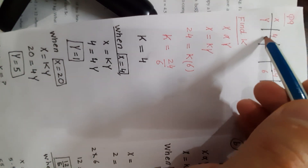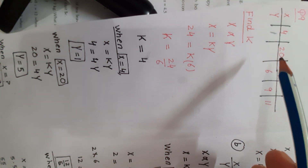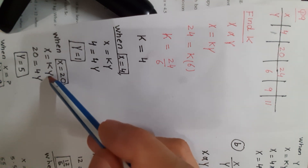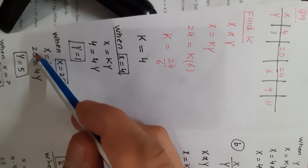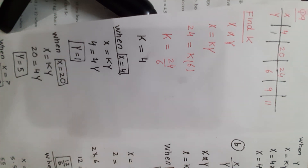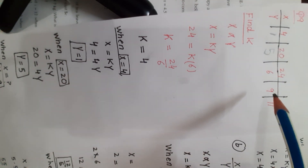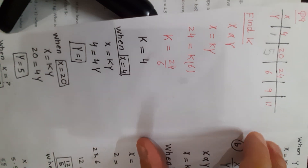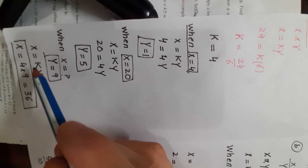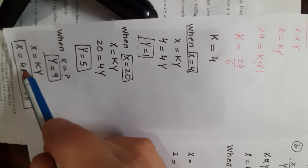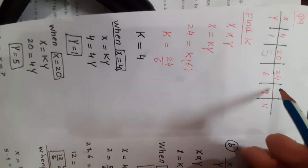So in the table, y equals 1. The next missing value is y against x equals 20. When x is 20, use x equals ky with k equal to 4: 20 over 4 gives y equal to 5. Then find x when y is 9: x equals ky equals 4 times 9 equals 36. Insert x equals 36 in the table.